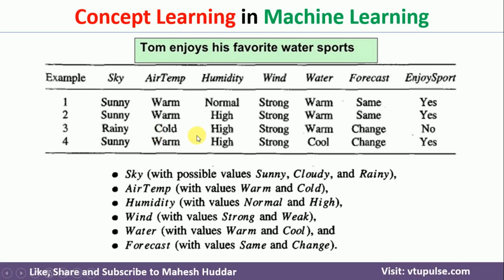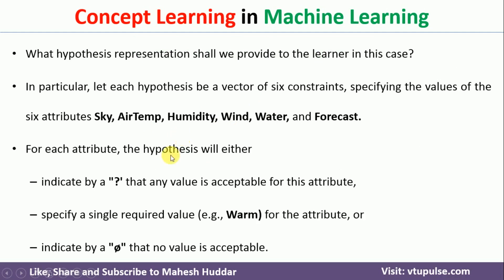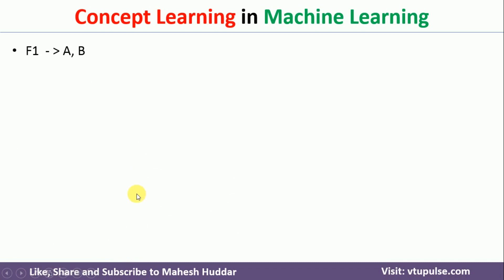Once you know the number of concepts, you can determine the number of hypotheses. When representing the hypothesis space along with those possible values, we need to consider two additional symbols: question mark and null. Question mark means it will accept anything and everything. Null means it will not accept anything. If I write 'warm' at that place, it will accept only warm. If I write 'rainy', it will accept only rainy. We will use a simple example to understand how to write all possible concepts and hypotheses.